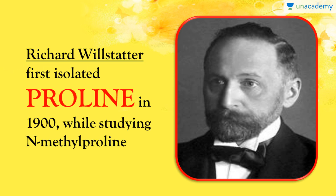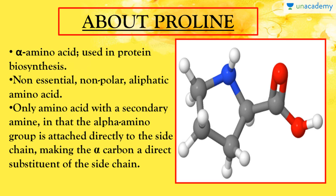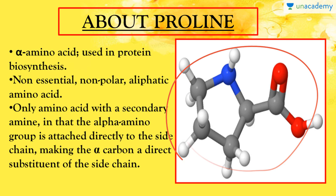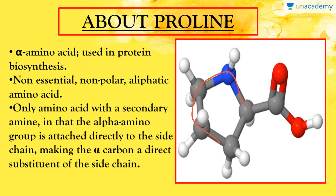Regarding the discovery, Willstatter was the scientist who first isolated proline in 1900 while studying N-methyl proline. This is how the molecular structure of proline looks like — here you can see the side chain attached to the two groups of the major backbone of the proline molecule.